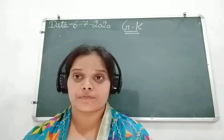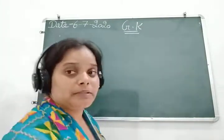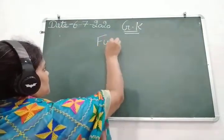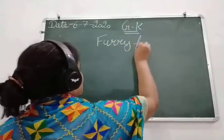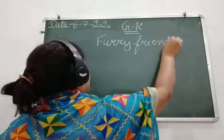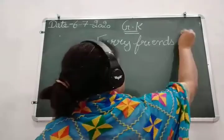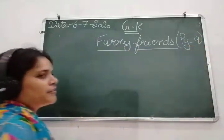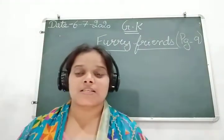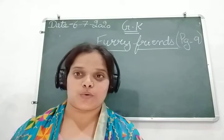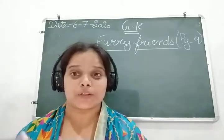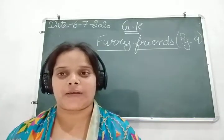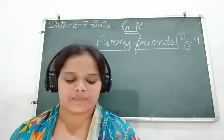This is your second chapter of the first unit, page number 9. The name of the chapter is Furry Friends. Furry means that animals have a lot of hair — we don't call it fur in human beings, but in animals they have a lot of hair, so that is Furry Friends.